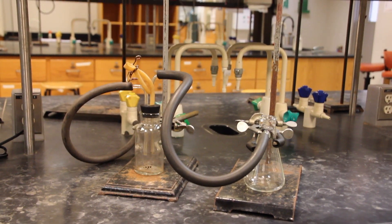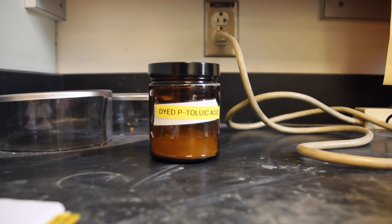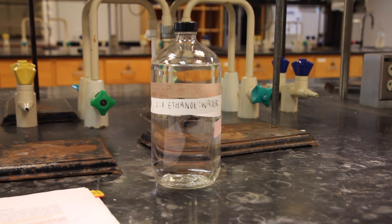You're going to begin this experiment by recrystallizing 0.5 grams of orange toluic acid using a 2 to 1 mixture of ethanol water.